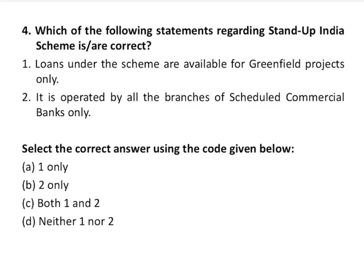Question number four is regarding the Stand-Up India Scheme. The first statement says loans under the scheme are available for greenfield projects only — this is correct. The second says it is operated by all branches of scheduled commercial banks only — also correct. Both statements one and two are correct. The scheme aims at promoting entrepreneurship among women and Scheduled Caste and Tribe communities. It facilitates bank loans between Rs. 10 lakhs and Rs. 1 crore to at least one SC or ST borrower and at least one women borrower per bank branch for setting up greenfield enterprises in manufacturing, service, or trading sectors. SC, ST, or women entrepreneurs above 18 years of age are eligible.